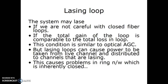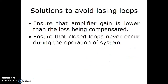Lasing loop: The system may lase if we are not careful with the closed fiber loop, if the total gain of the loop is comparable to the total loss in the loop. This condition is similar to optical AGC. Lasing loops can cause power to be taken from live channels and distributed to channels that are lasing, causing problems in ring networks which are inherently closed. Solutions to avoid lasing loops: ensure that amplifier gain is lower than the loss being compensated, and ensure that closed loops never occur during the operation of the system.